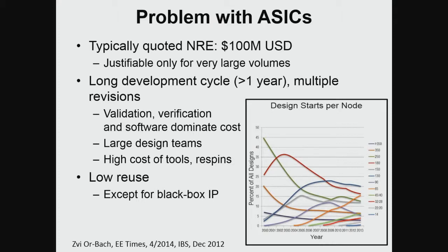That is in stark contrast with the name 'application specific' — there is a very limited number of applications that can support that model. In addition, ASICs are quoted with very long development cycles, often needing multiple revisions, with issues in validation, verification, and porting software. They often require large design teams, plus high costs of tools and licenses. As a result, the number of ASIC starts has been going down over time.